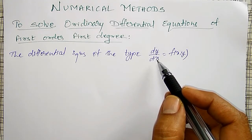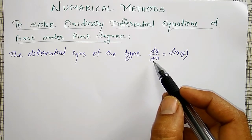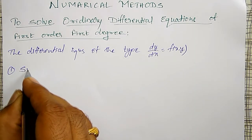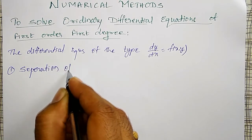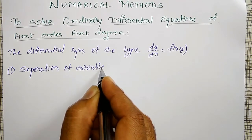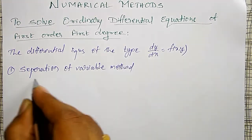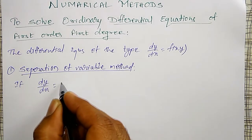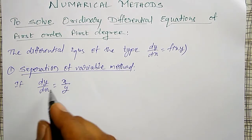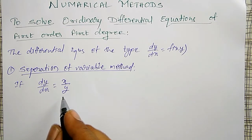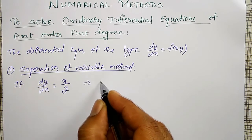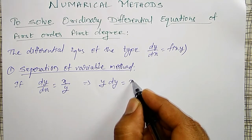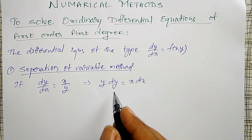The order is 1, degree is also 1. To solve such differential equations, analytical methods, 3 to 4 methods were discussed. The first method is separation of variable method. That is, if dy by dx is equal to x divided by y, we can separate the variable and its derivative — y dy on one side and x dx on the other side. We have separated the variables and their particular derivatives.